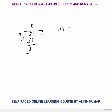37 can be written as 7 into 5 plus 2. This means the number equals divisor into quotient plus remainder. That is the basic Division Theorem: number is equal to divisor into quotient plus remainder.